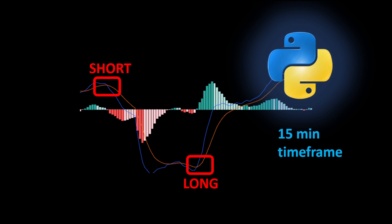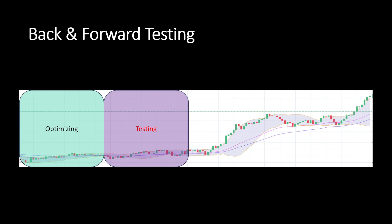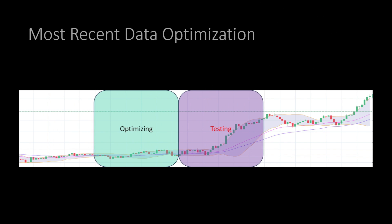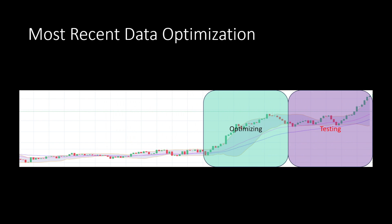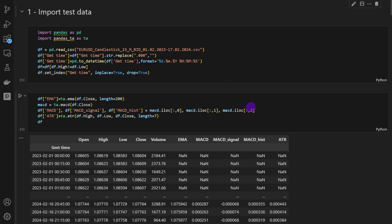We will write the strategy in Python and backtest it on historical data using a 15-minute time frame. If you are interested in this type of strategy you can also try it on different time frames. I will also show how we can apply a quick forward testing approach where we optimize the parameters on a slice of data and then test on future unseen data. We can repeat this to get a better estimation of the strategy's performance.